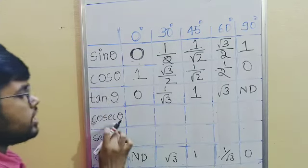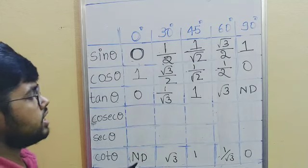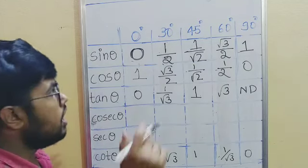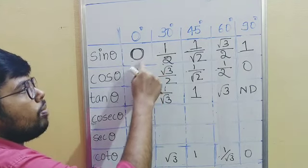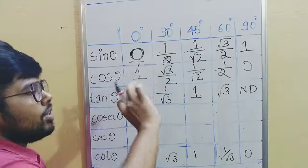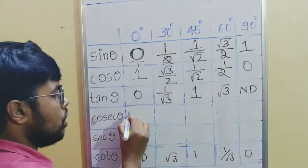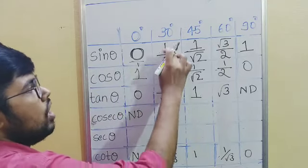Next, writing cosec values is very easy. We know that cosec and sine are inverse to each other. That means zero by one becomes one by zero. One by zero is not defined. One by two, just reverse it, becomes two by one, which is just two.